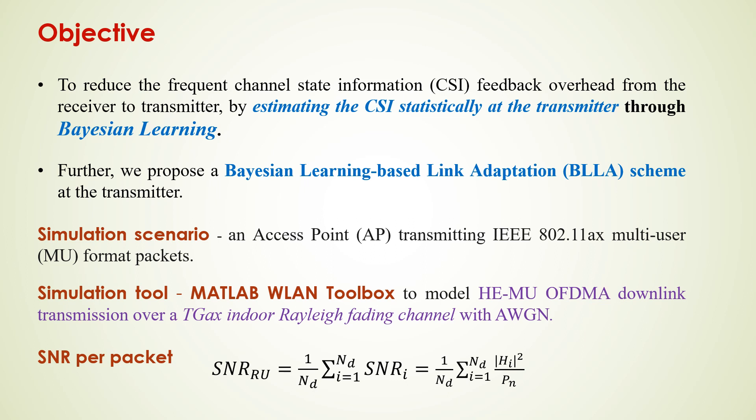The SNR per packet, or SNR over a resource unit consisting of N_D subcarriers, is given by this equation, where N_D is the number of subcarriers in the resource unit, |H_i|² is the channel gain of the i-th subcarrier, and P_NSC is the noise power.